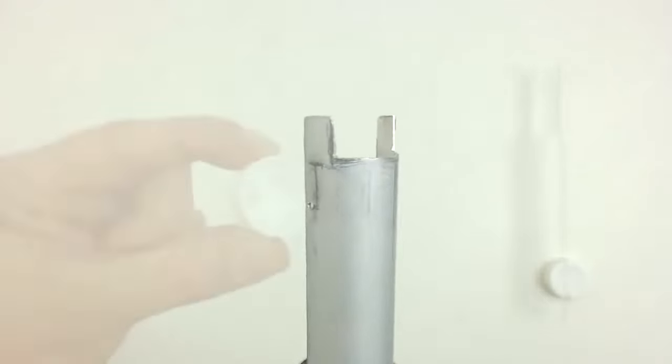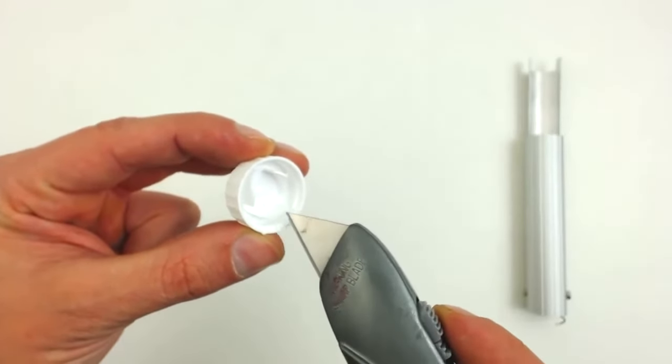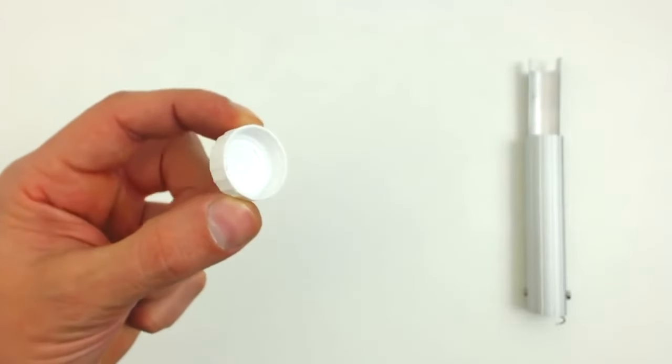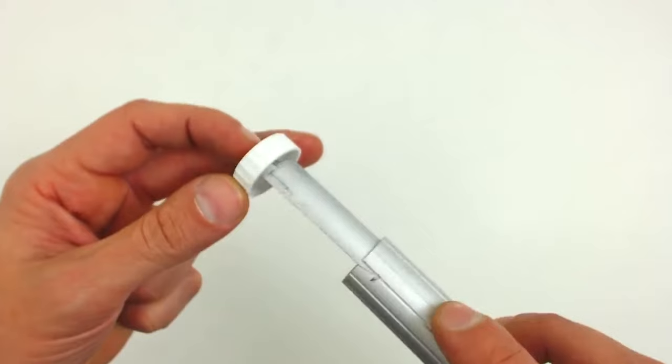The next piece to modify is the cap. The first thing to do is to cut the interior part. And then we put it in its place and we mark it in order to make a window.